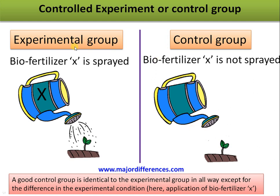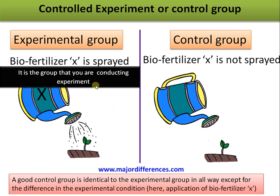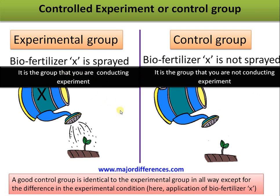Now moving to the next point: the control group in an experiment. In the experiment — effect of biofertilizer X on plant growth — there are two groups: an experimental group and a control group. The experimental group is where the researcher conducts the experiment, whereas the control group is identical to the experimental group except for the difference in the experimental condition, which here is the application of fertilizer X.